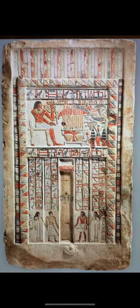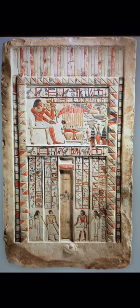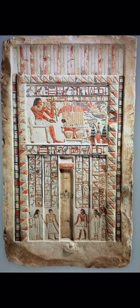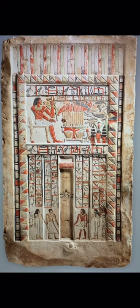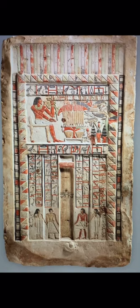Egyptology lovers, today we are doing the false door of the royal sealer named Neferiyu, from about 2150 to 2010 BCE. This is from the First Intermediate Period.